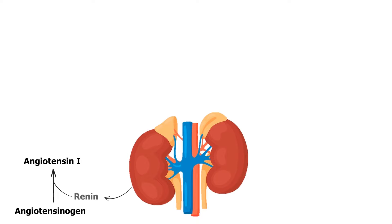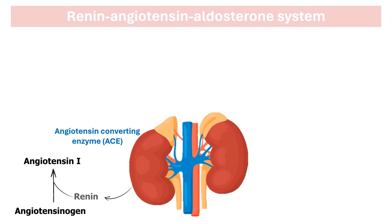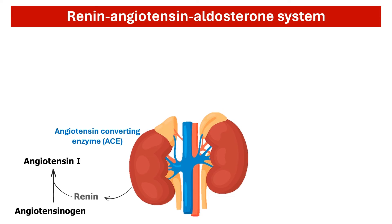Angiotensin-converting enzyme, or ACE, is crucial in the renin-angiotensin-aldosterone system, a complex physiological pathway that plays a central role in regulating blood pressure. ACE converts angiotensin 1 to angiotensin 2, which does a number of different things.